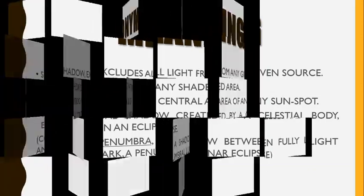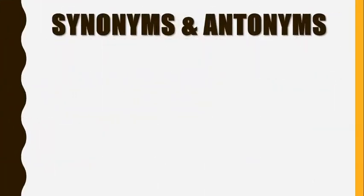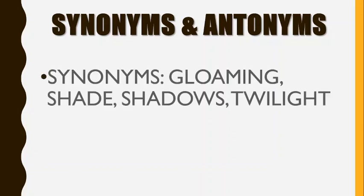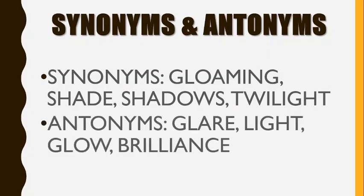Let us now talk about the synonyms and antonyms of this word. Synonyms are words similar in meaning while antonyms are the opposites. The synonyms of umbra include gloaming, shade, shadows, and twilight. The antonyms include glare, light, glow, and brilliance.